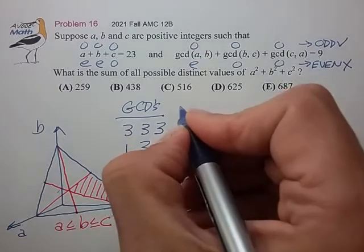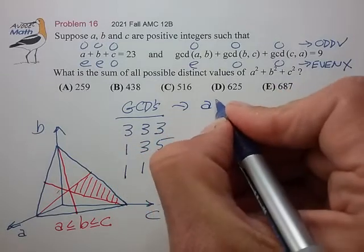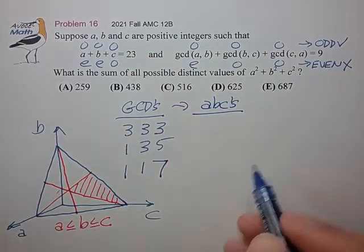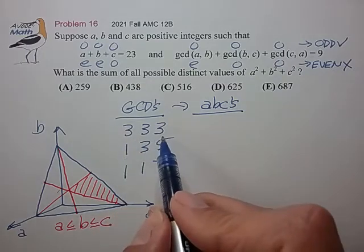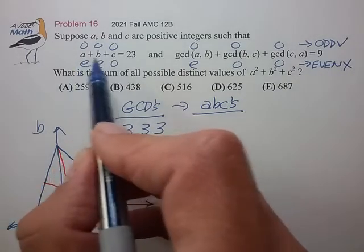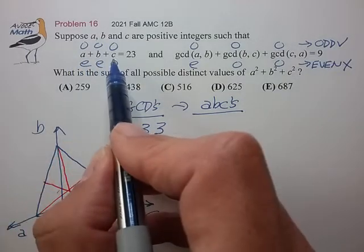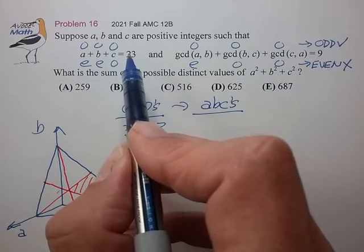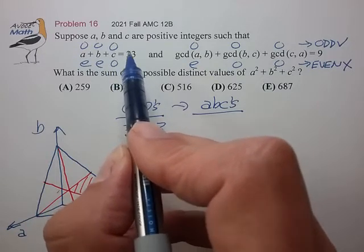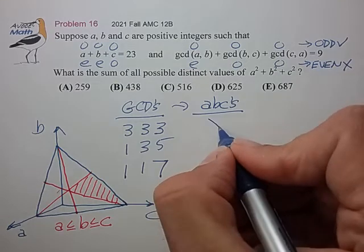Okay, so now let's see what does that tell us about our ABCs. If the GCDs are all three, that means that all of the ABs and Cs are multiples of three, but that doesn't match up with a sum that's not a multiple of three. So this is not a valid pattern.